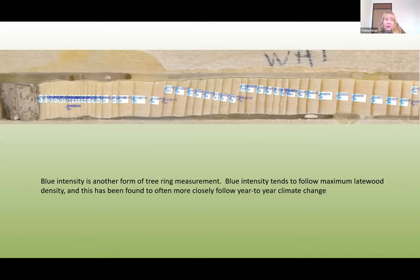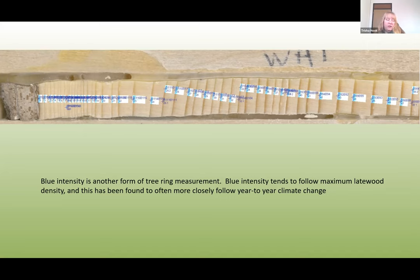A new frontier in tree ring analysis is blue intensity. Blue intensity has shown to be a better indicator of the climate record than tree ring measurements. We look at maximum late-wood intensity, and it better correlates to year-to-year climate change. Quantitative wood anatomy would give us similar information, but blue intensity is a much quicker and easier method to give us really good, finite information.